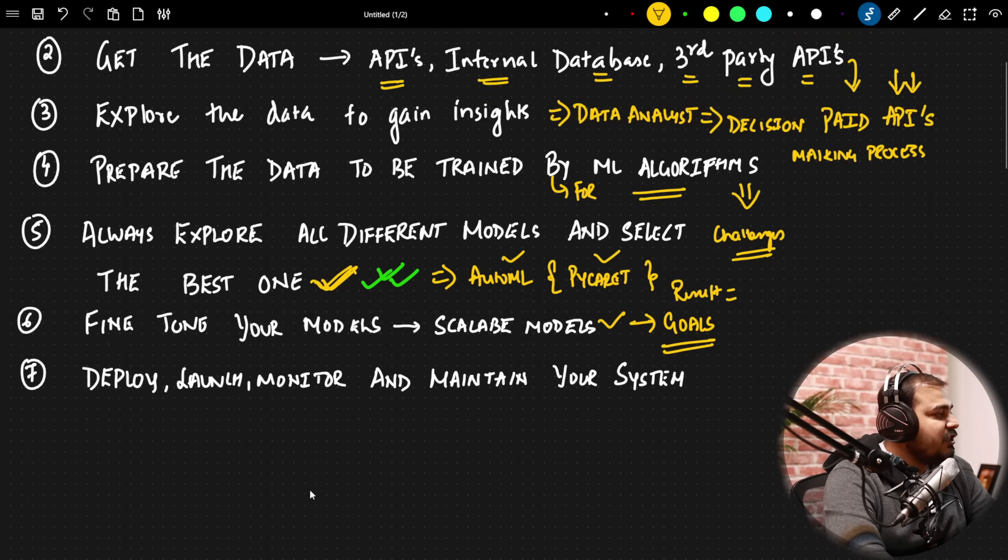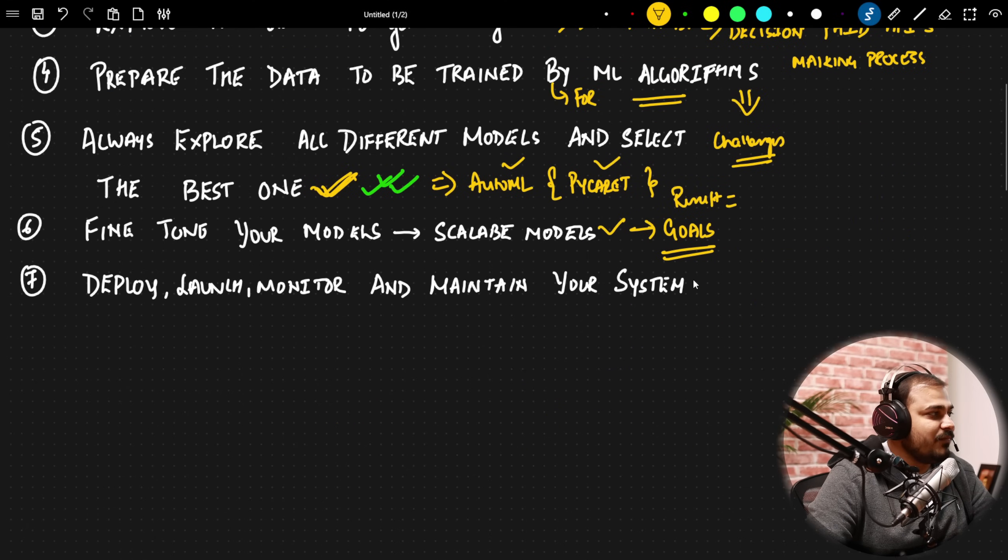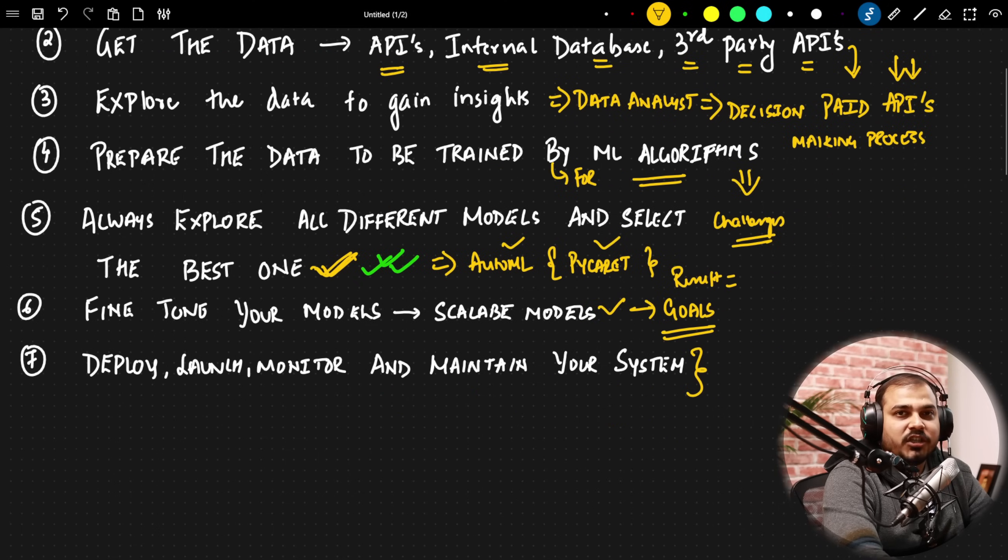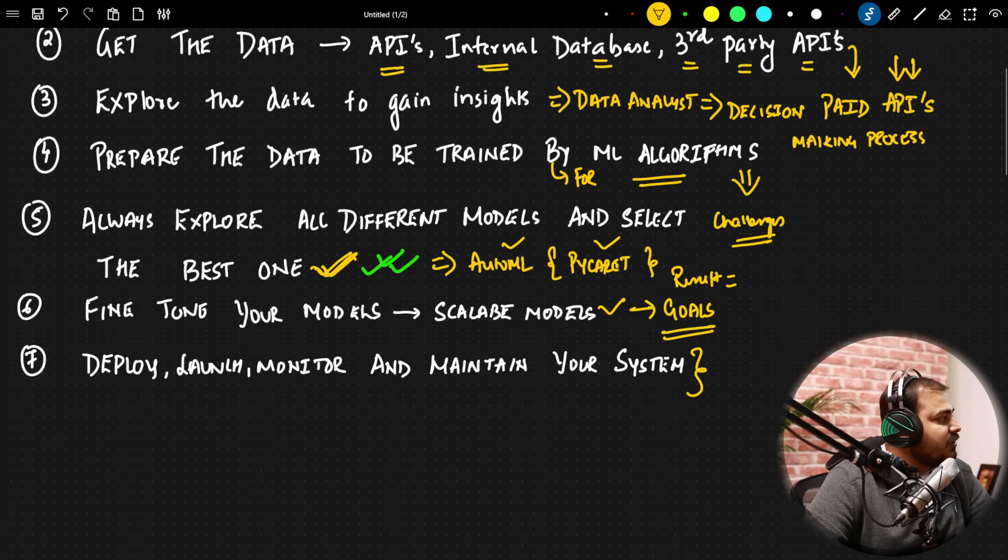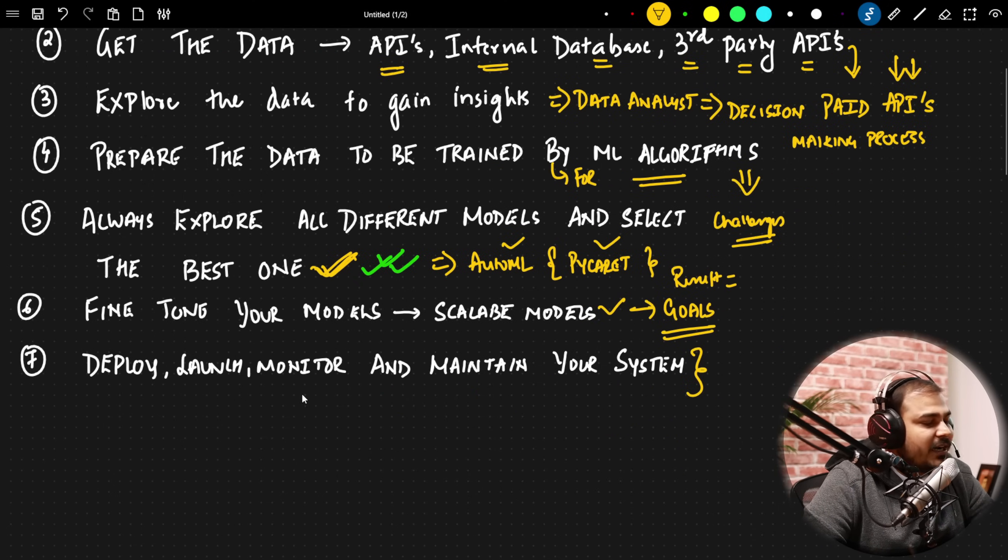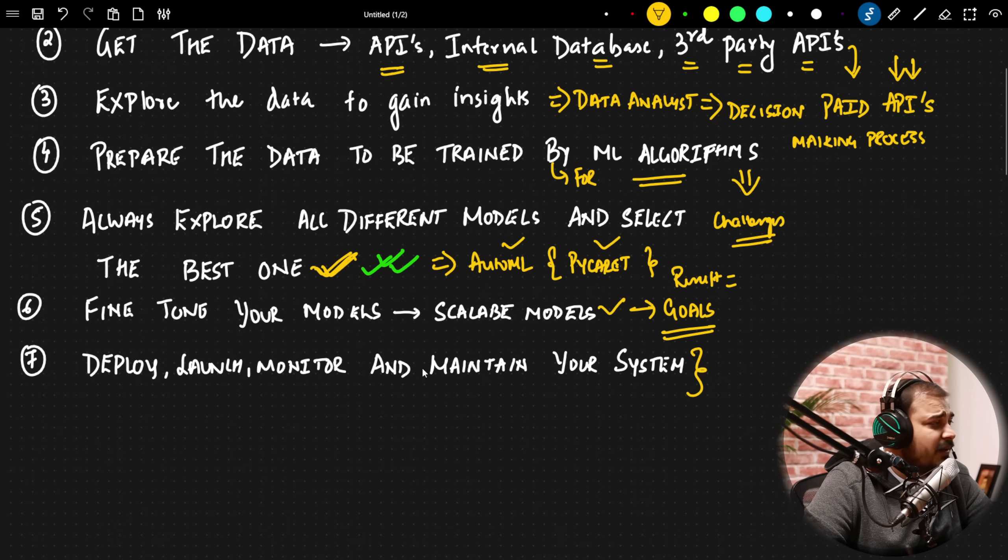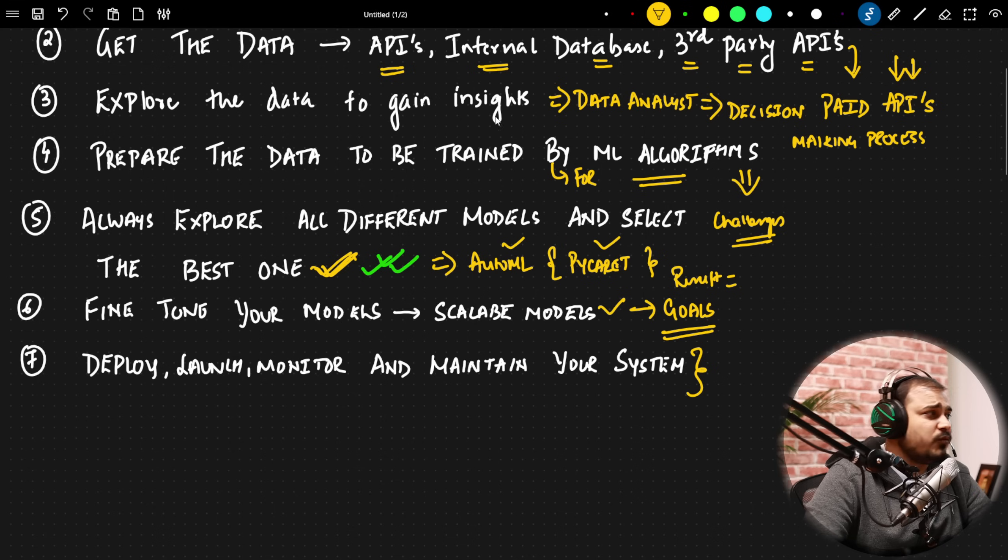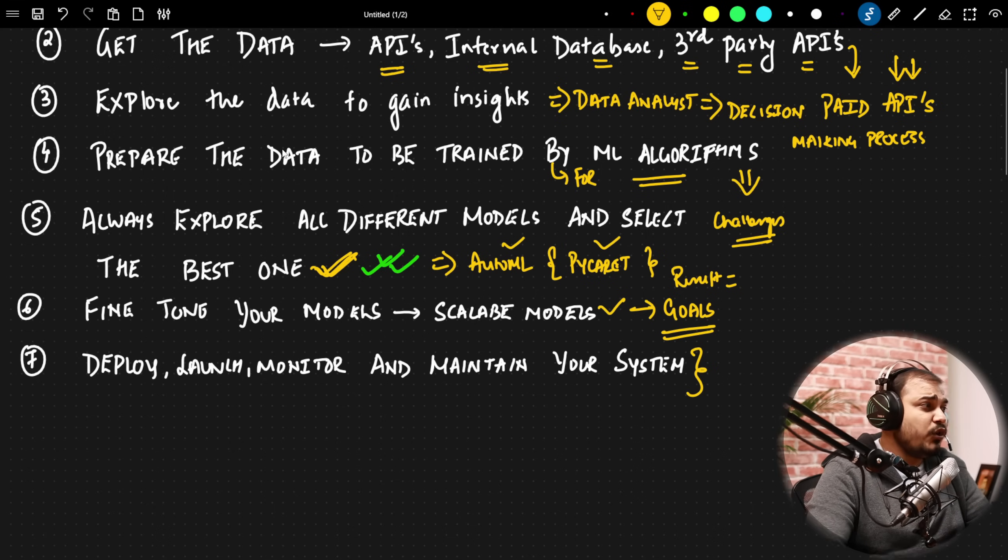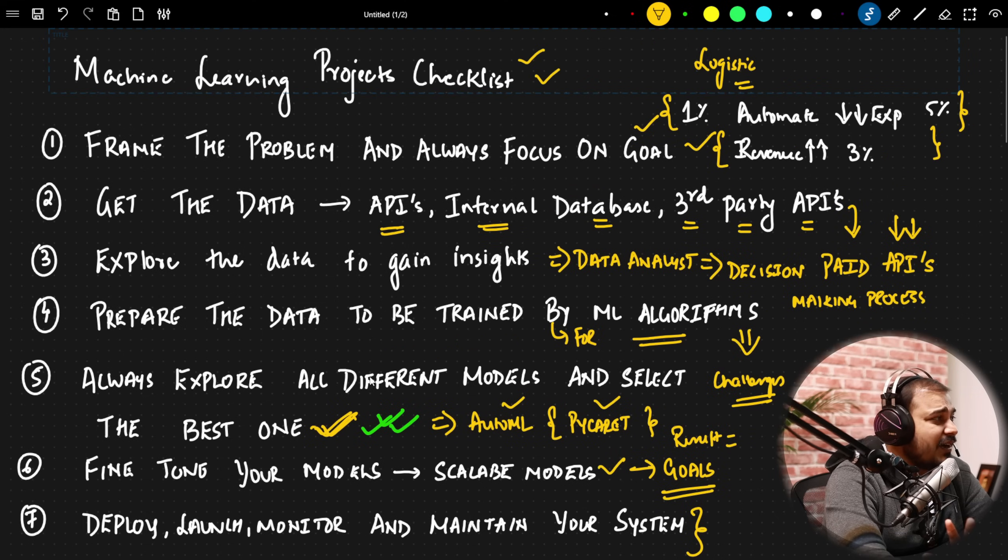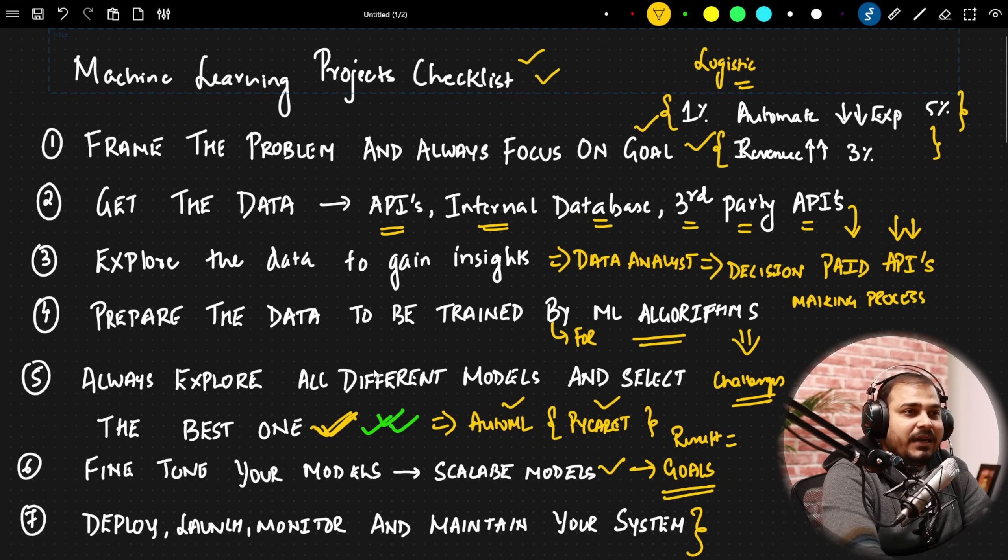Then finally, deploying, launching, and monitoring and maintaining your system. So this should also be a plan in your machine learning project checklist. First, deploying with respect to some specific cloud, launching, monitoring - how you are going to monitor it. There are various ways to do it in AWS cloud or GCP. And finally, you are maintaining your system. So when you cover all these points, when you cover all this checklist, your machine learning projects looks like a complete, complete project in short. Nothing is missing in all these things.